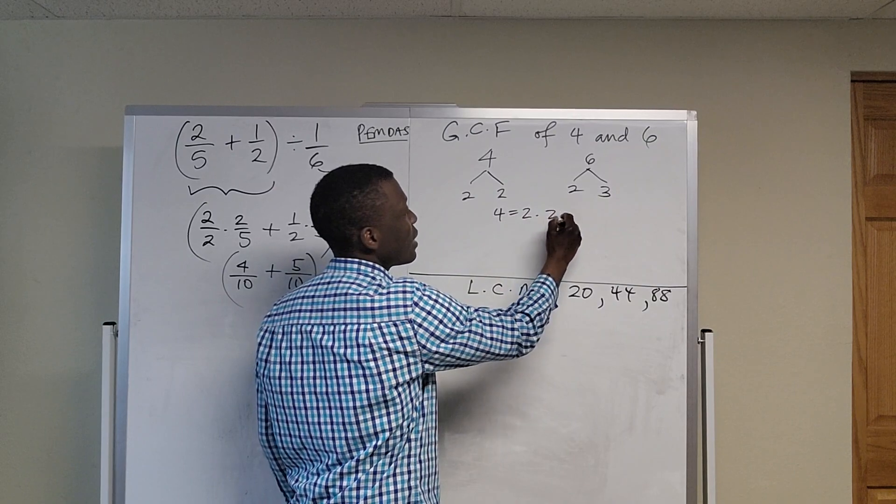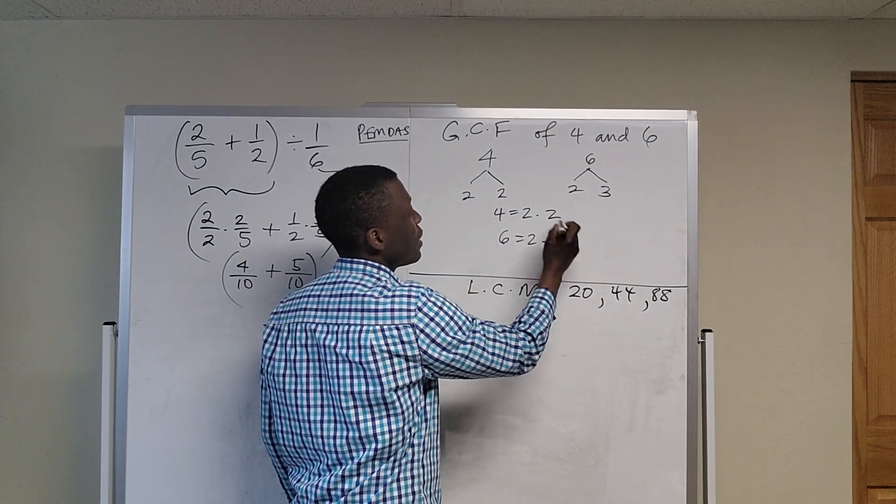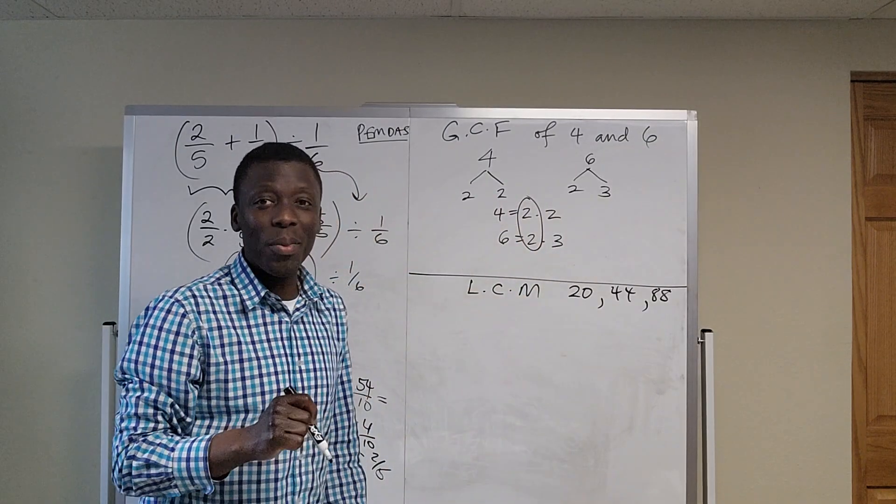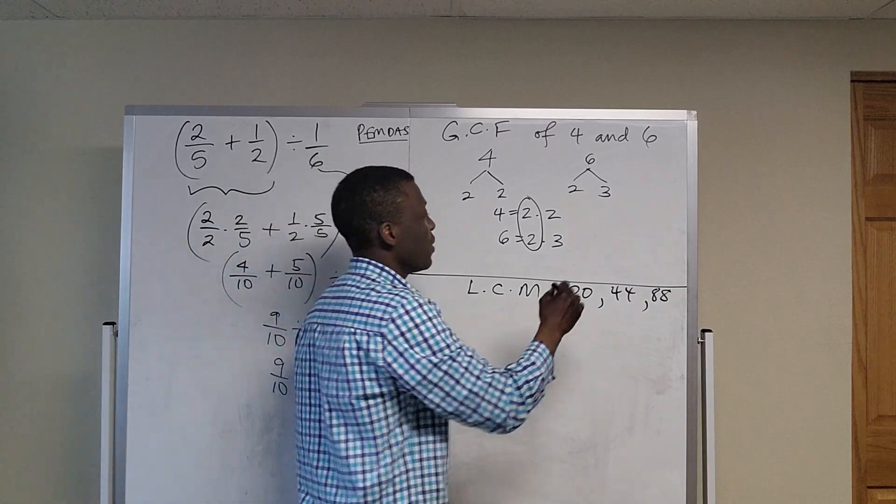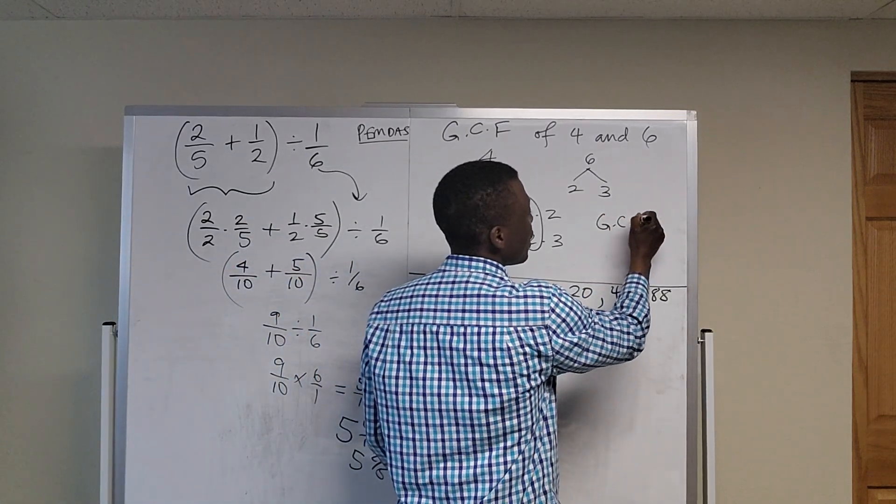So you write it out like that, and you write it out like that. You circle what they have in common, and that is the greatest common factor. So the greatest common factor is 2.